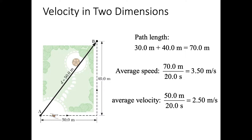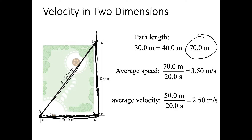Let's do one example. A person walks along a path: 30 meters, then 40 meters, and 40 meters. From trigonometry, the distance between A and B is 50 meters. The distance traveled is 30 plus 40 equals 70 meters. Average speed is distance traveled — 70 meters — divided by the time it takes, for example 20 seconds, giving an average speed of 3.5 meters per second.